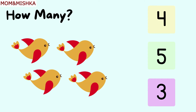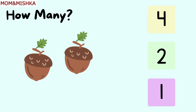How many birds? Let's count: one, two, three, four. Four birds. How many acorns? One, two. There are two acorns.